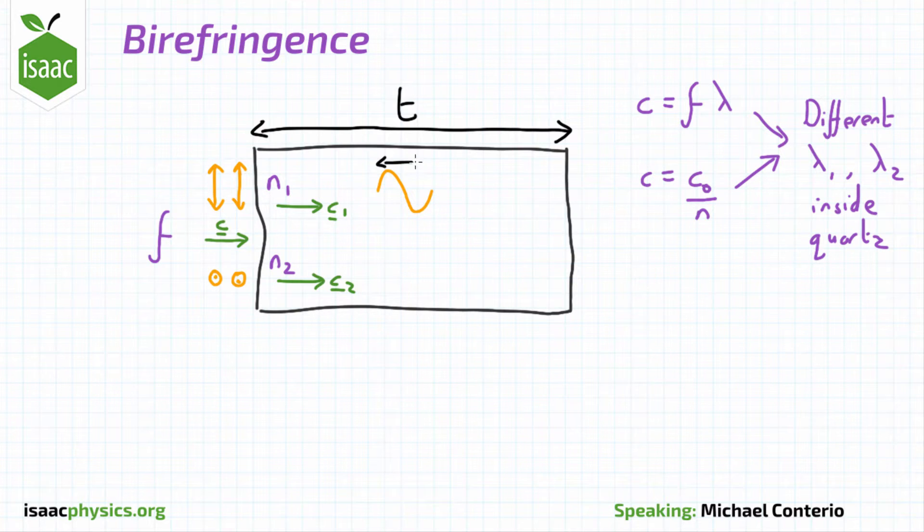If we have a wavelength lambda 1, you have to think, how many times will that wavelength fit inside the distance T? You should also do the same for lambda 2.